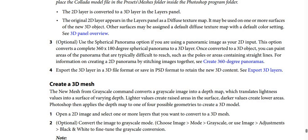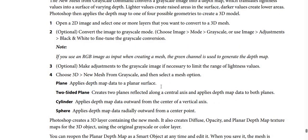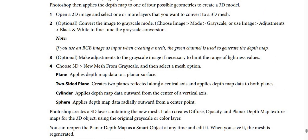How to create a 3D mesh. The New Mesh From Grayscale command converts a grayscale image into a depth map, which translates lightness values into a surface of varying depths. Lighter values create raised areas in the surface and darker values create lower areas. Photoshop then applies the depth map to one of four possible geometries to create a 3D model.